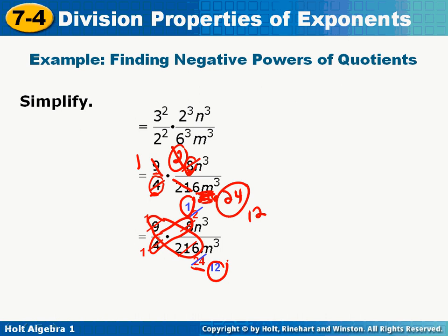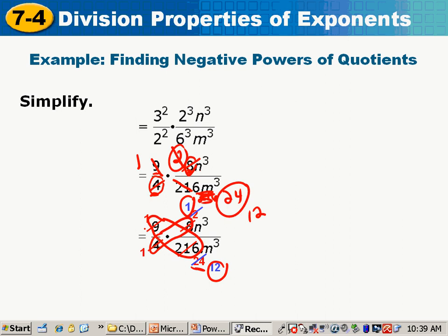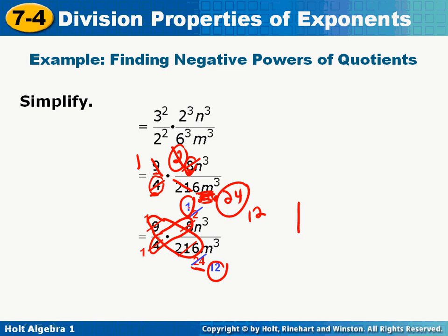So now I have to write down everything I have left over. On the top, I see a 1. I see an n to the third. In the denominator, I see a 1 and a 12, which multiplies to give me 12, and m to the third. I don't have to write that 1, but I can if you want me to. So the final answer is n cubed over 12, m cubed.